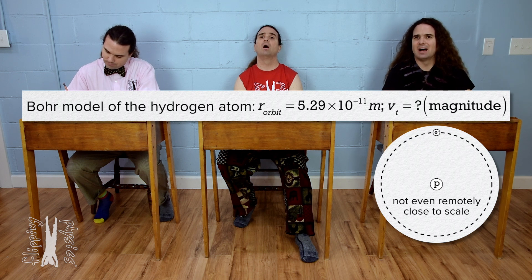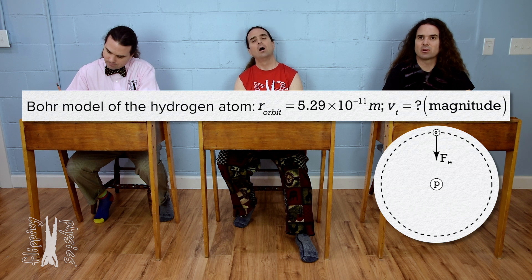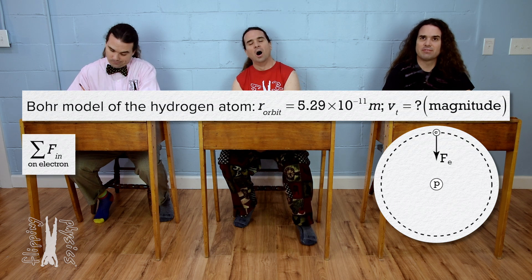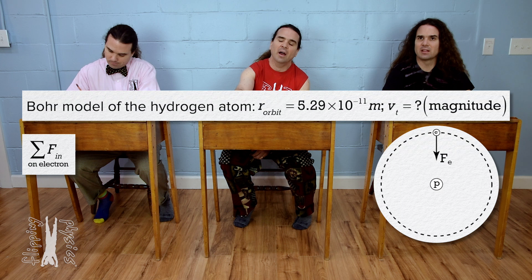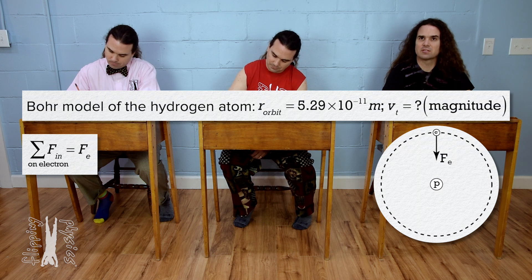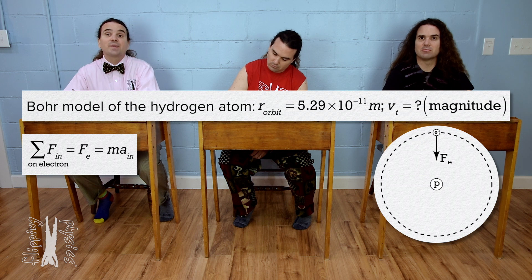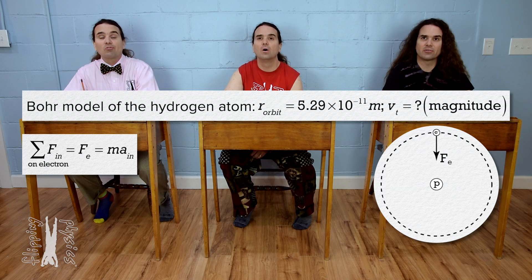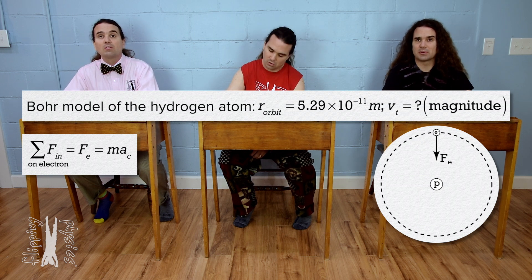The only force acting on the electron is the electric force which is directed in toward the proton. So, the net force in the in direction on the electron equals the electric force. Then, the net force in the in direction also equals the mass of the electron times acceleration in the in direction, which is the centripetal acceleration.